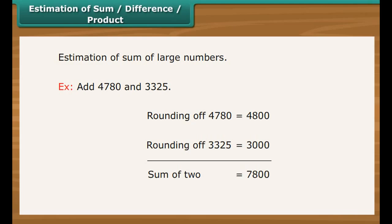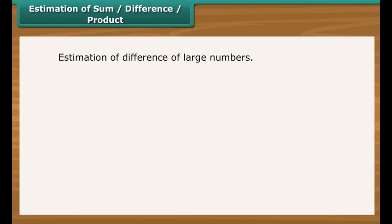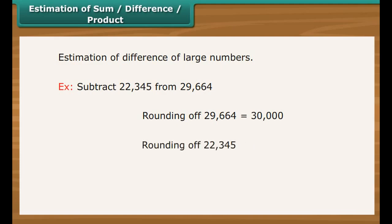Estimation to the nearest number can help in the estimation of the difference of two large numbers. For example, subtract 22,345 from 29,664. Rounding of 29,664 would make it 30,000. Rounding of 22,345 would make it 20,000. Difference of 2 is equal to 10,000.